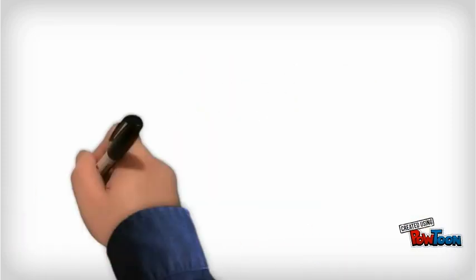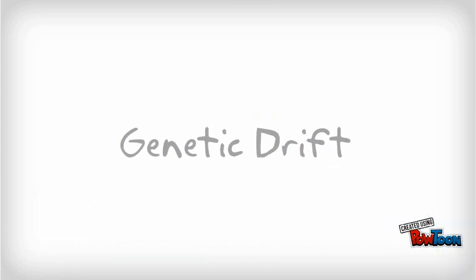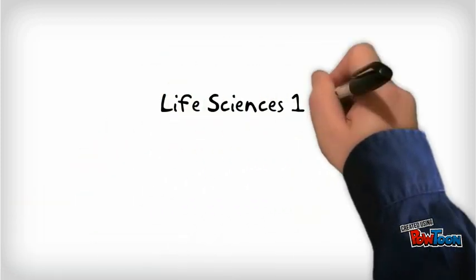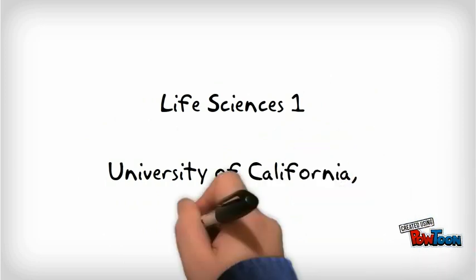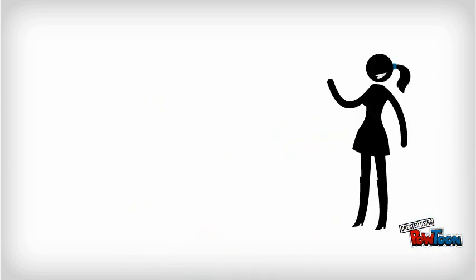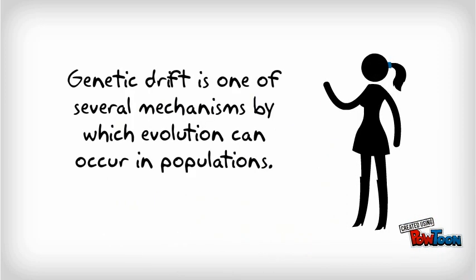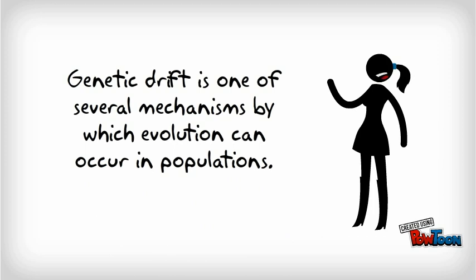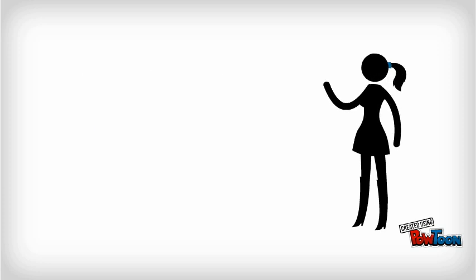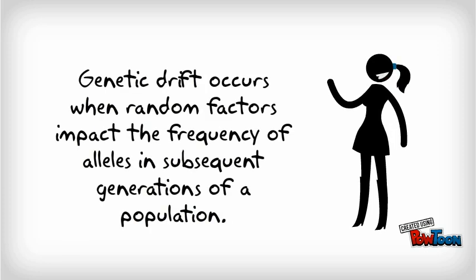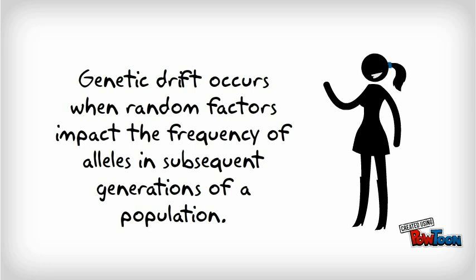In this tutorial, we will discuss the concept of genetic drift. Genetic drift is one of several mechanisms by which evolution can occur in populations. Genetic drift occurs when random factors impact the frequency of alleles in subsequent generations of a population.